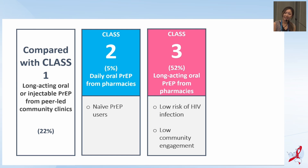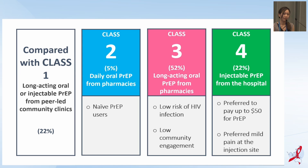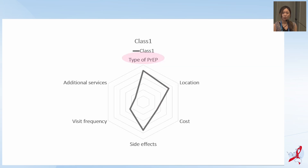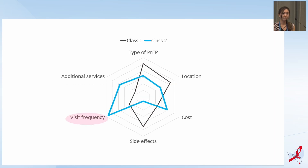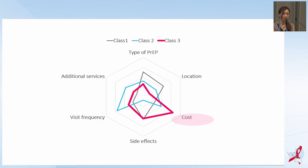The majority of participants were likely to be in class 3, which prefers long-acting oral PrEP from a pharmacy. Individuals in this class were likely to have a low risk of HIV infection and low community engagement. One-fifth of participants were likely to be in class 4, which prefers injectable PrEP from a hospital. Individuals in class 4 were willing to pay up to 50 Australian dollars for PrEP and did not mind mild pain at the injection site as a side effect. When looking at the key driver of PrEP use per class, type of PrEP was most important for class 1, visit frequency for class 2, and cost for classes 3 and 4.